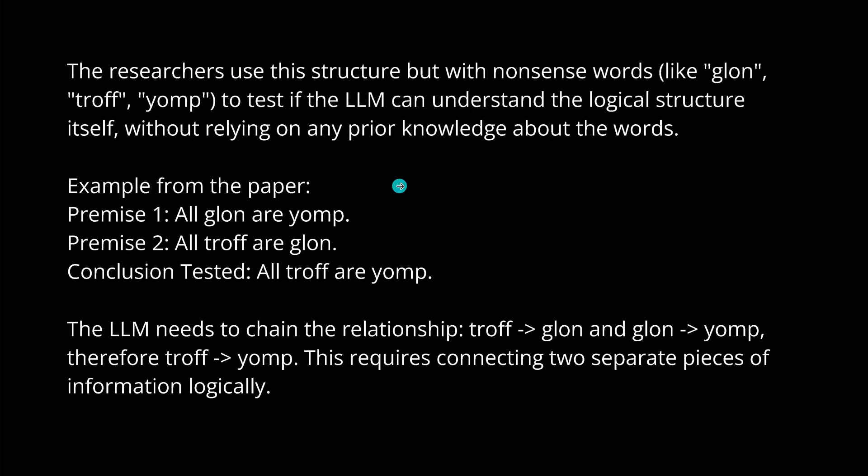Now, in this study here, this new study by Google, of course, who else? They used this now with nonsense words, like glon, trough and jump, so that we have now an understanding of the logical structure itself without relying on any prior knowledge about those words. So, you will find now here a modification to test here the pure logical functionality. Premise 1 is this, premise 2 is this, and conclusion tested is now what you see here on the screen. So, you see, the relationship between those is now the element, connecting now two separate pieces of information logically. The question is, how we do this? What is the methodology we can apply?